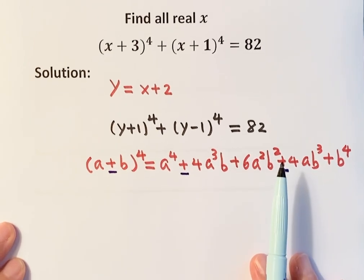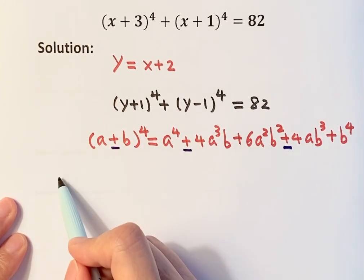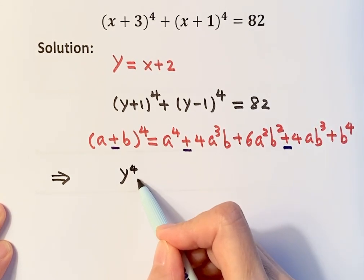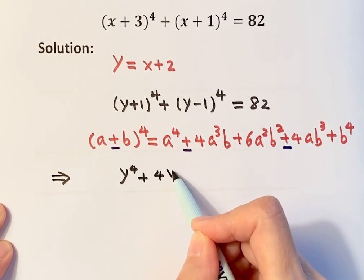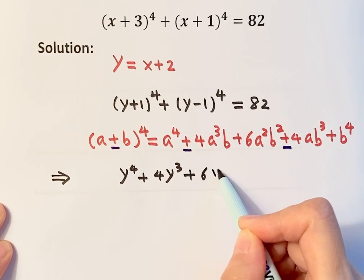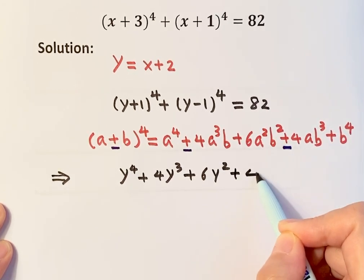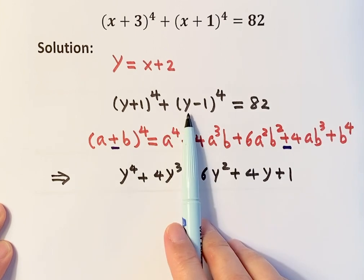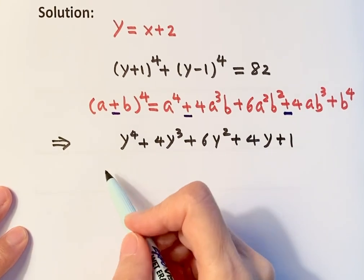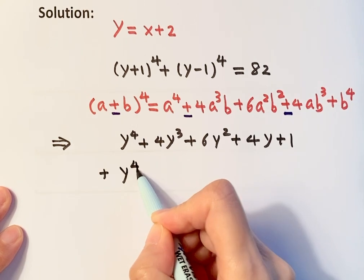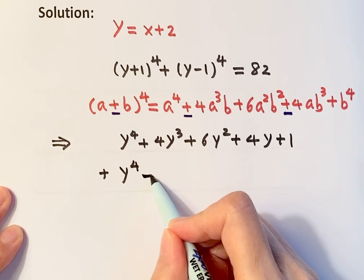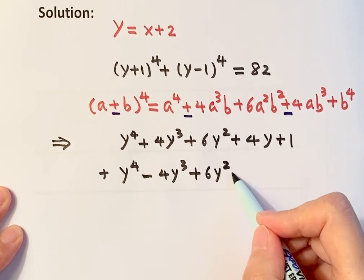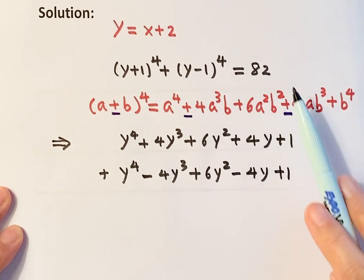Let's expand (y+1)⁴ first: that gives y⁴ + 4y³ + 6y² + 4y + 1. Then for the second term, (y-1)⁴: that gives y⁴ - 4y³ + 6y² - 4y + 1. So we have the sum of both expansions equal to 82.